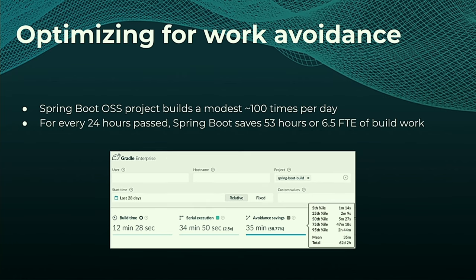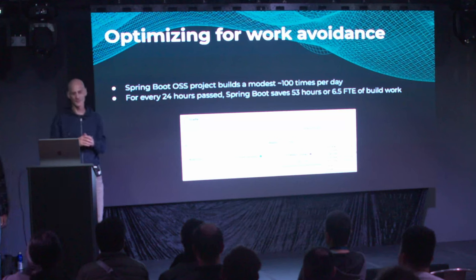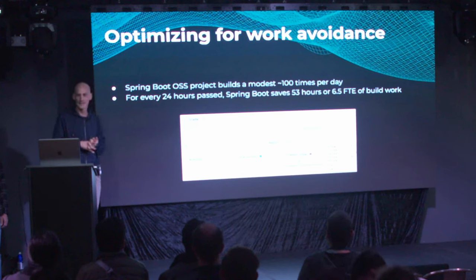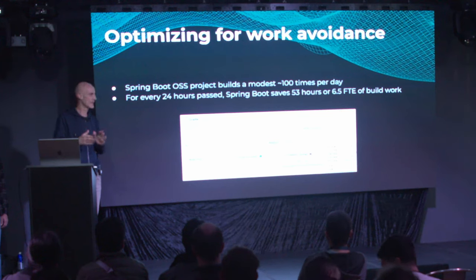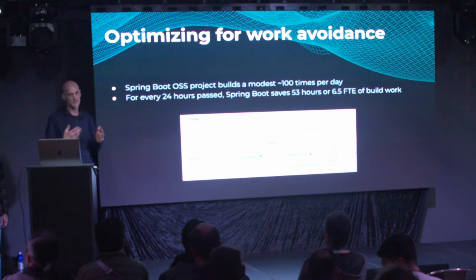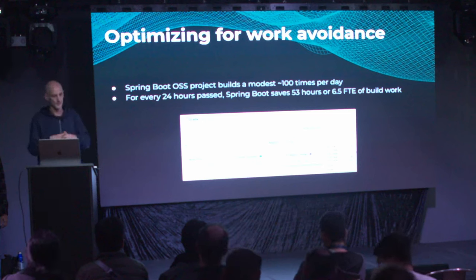For a concrete example: Spring Boot, a very active open source project with around 100 builds per day, is saving around 50–55 hours of task execution time every 24 hours — which equals about six and a half full-time employees. Since lunch yesterday, 53 hours were saved in task execution time, representing savings in CPU time, CI infrastructure costs, and developer time. And imagine doing a hundred or a thousand times more builds — the savings explode.